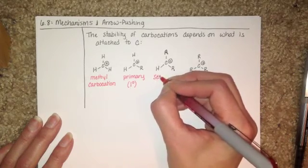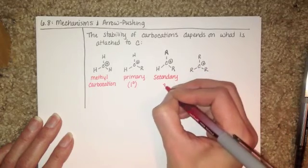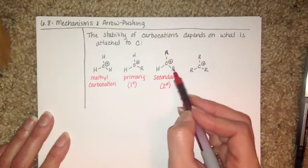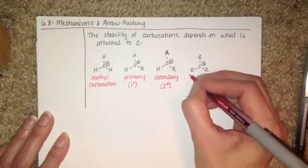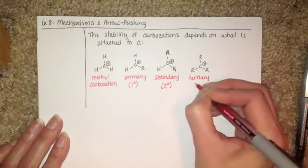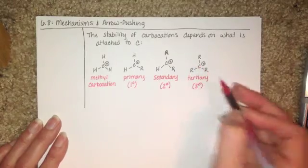The second one here is a secondary carbocation, abbreviated like that. This is secondary because it has two alkyl groups attached to the carbon. And the last one is tertiary, called tertiary because it has three alkyl groups attached.